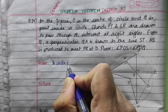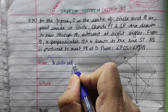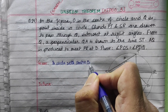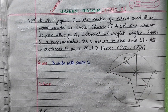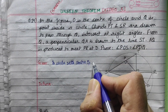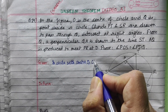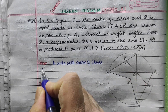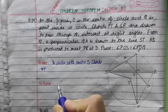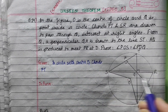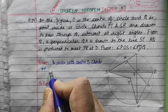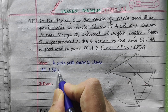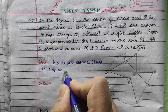In a circle with center O, we have chords PT and SR. PT is perpendicular to SR at Q.